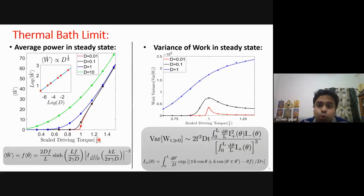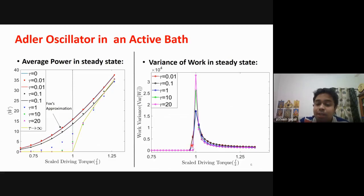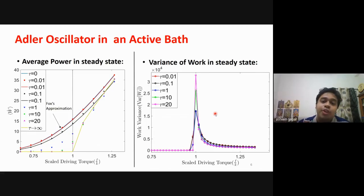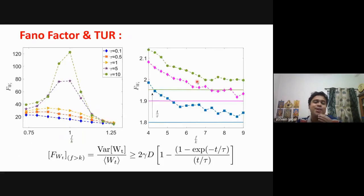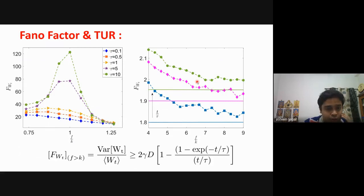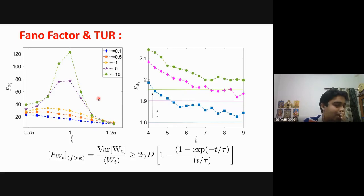As in the thermal bath case where variance shows significant peaks near the bifurcation, here peaks also appear. The key thing to understand is that with increasing activity of the bath, the peaks get enhanced — the variance of the work also gets enhanced at the bifurcation point. To understand this better, we use the Fano factor, which is the relative uncertainty for a random variable. The Fano factor for work clearly shows this behavior: at the bifurcation point the system shows a peak, so it is always safer to stay away from the bifurcation point for precise power input.